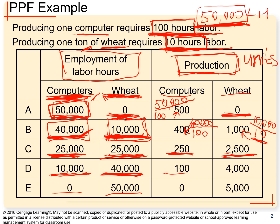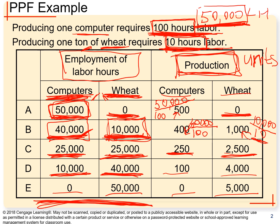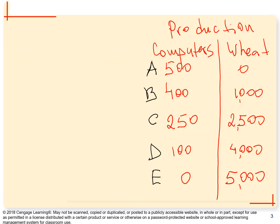So the last combination gives us 100 computers and 4,000 units of wheat, and then 0 computers and 5,000 units of wheat. We've now calculated the production taking into consideration the labor hour allocations. Now we're going to take this information and build the Production Possibilities Frontier.